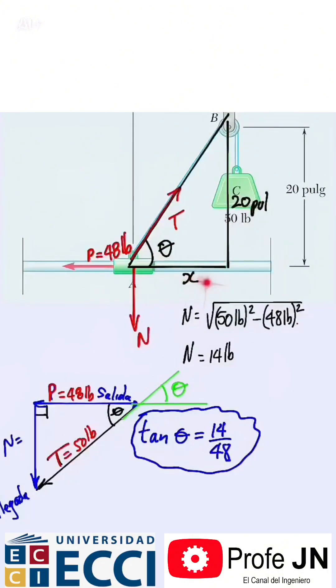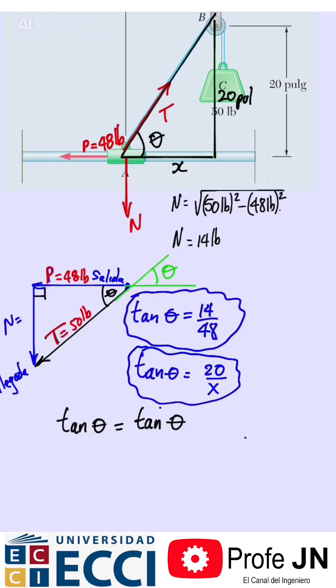Then we equate the tangent of theta from the first triangle with the tangent of theta from the triangle of lengths, since it is the same angle. I will equate 14 over 48 to 20 over X. And there it is—in this equation the only thing we don't know is X. We solve for it and we have the answer: X is 68.6 inches.